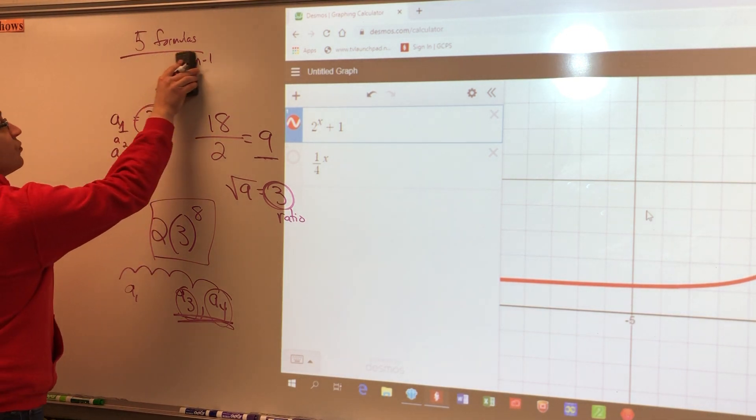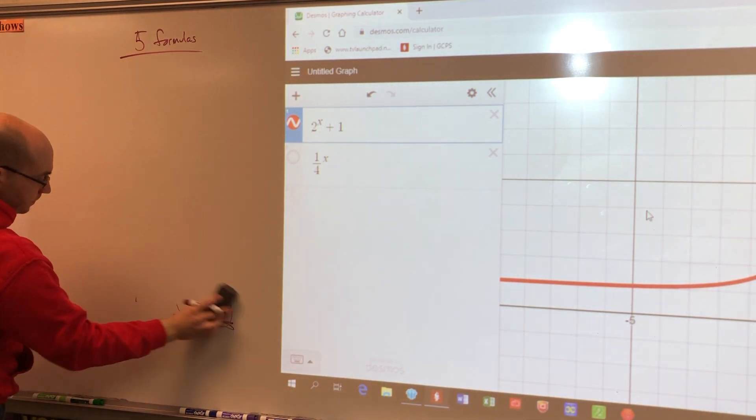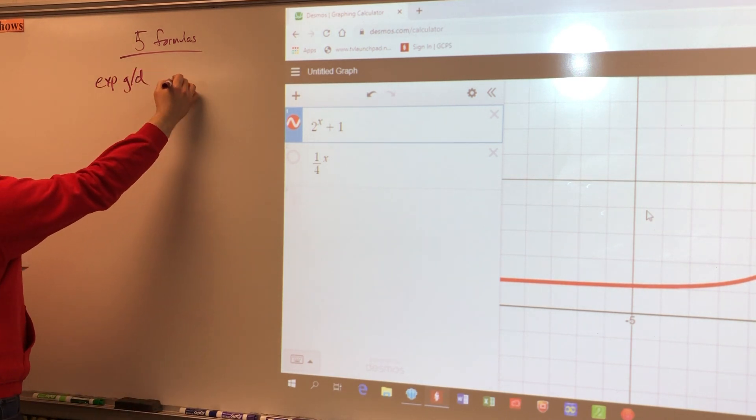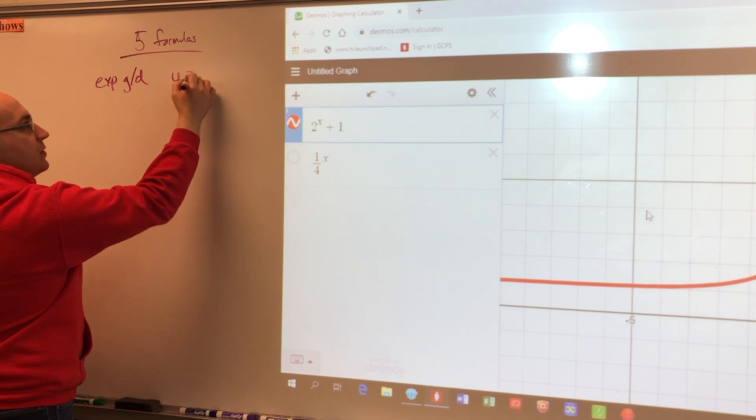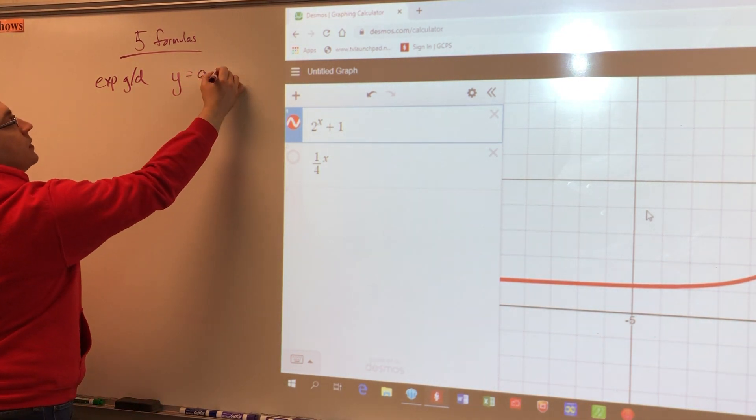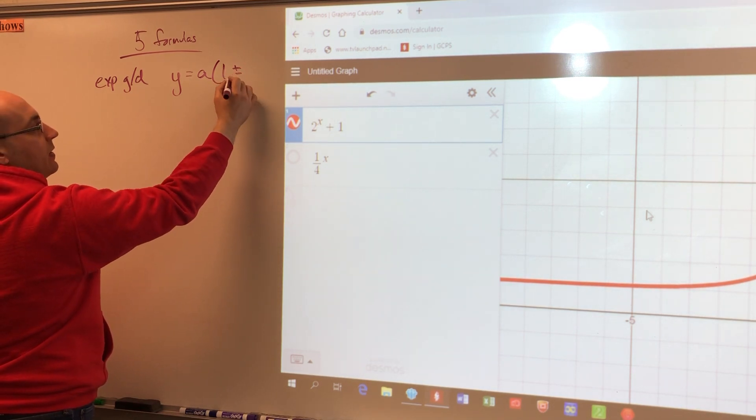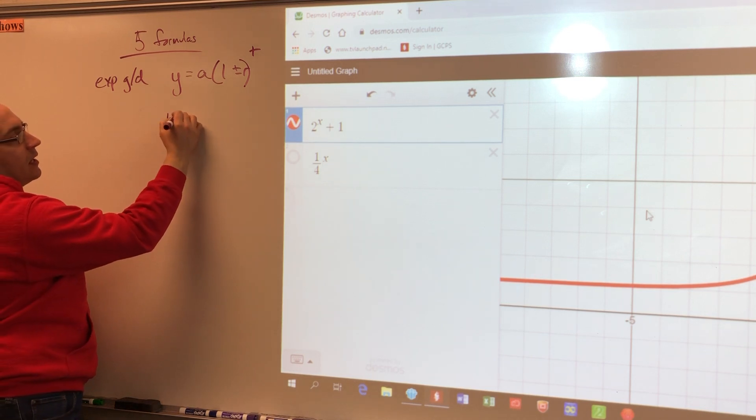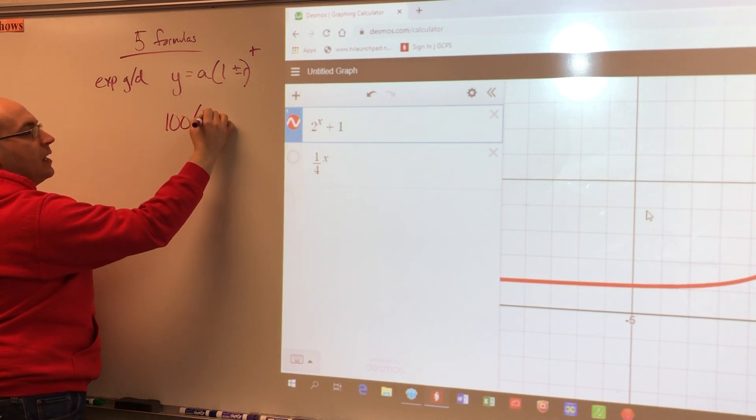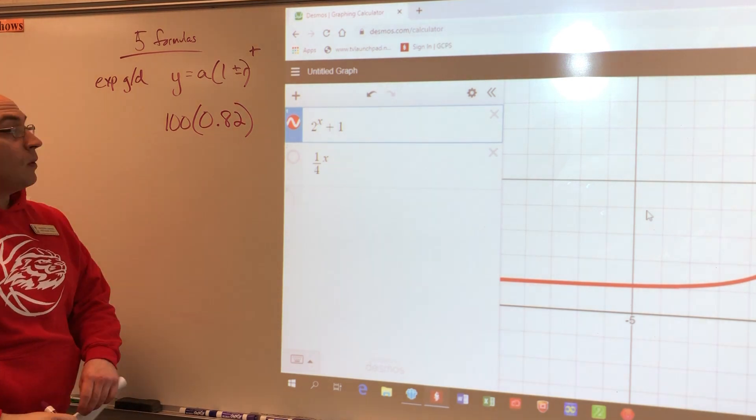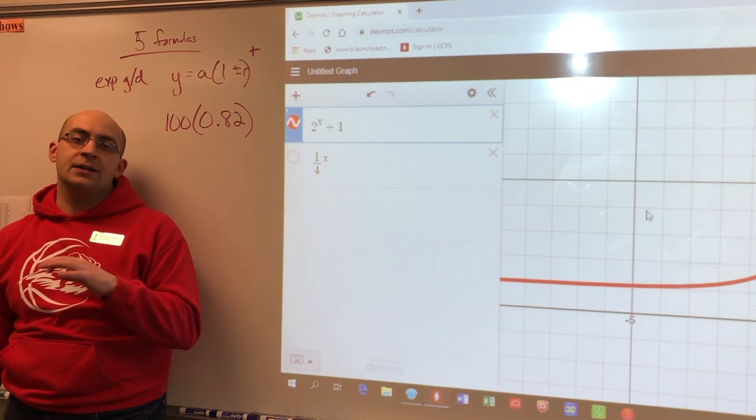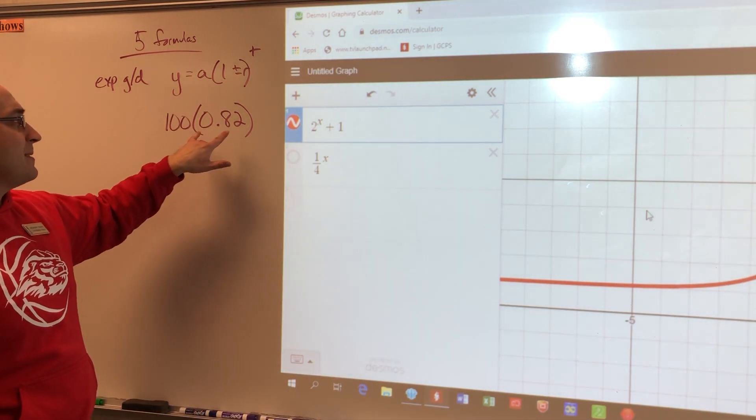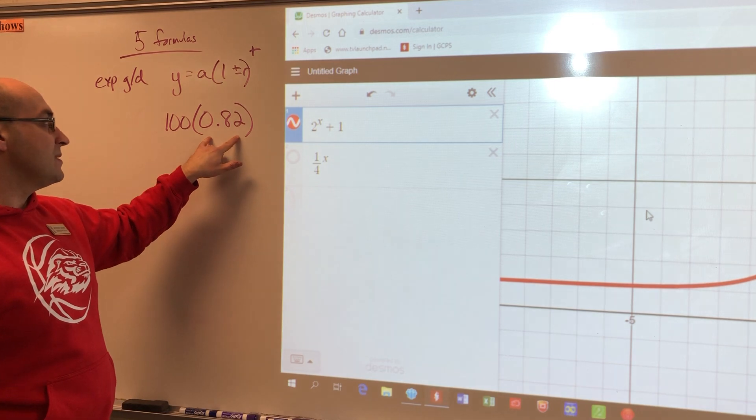Exponential growth and decay are pretty self-explanatory, right? The one thing I do want to highlight with exponential growth or decay is what happens when I ask you for what the growth rate or the decay rate is. So the formula is a times the quantity of one plus or minus R to the T power. Now, what if I gave you this? Let's say I had a hundred of my starting value and then I had 0.082 in the parentheses. I'm going to ask you whether that's growth or decay. And I'm going to ask you what the rate of growth or decay is.